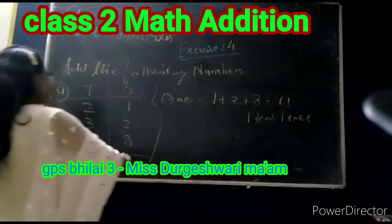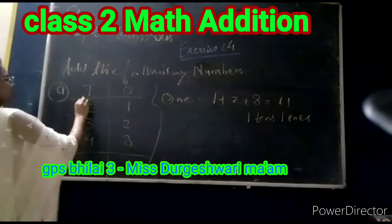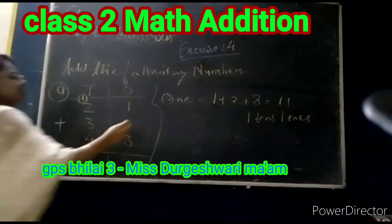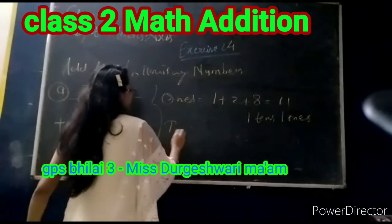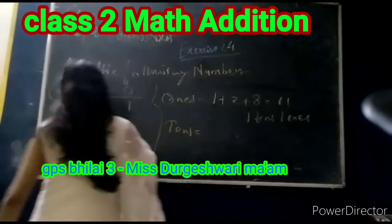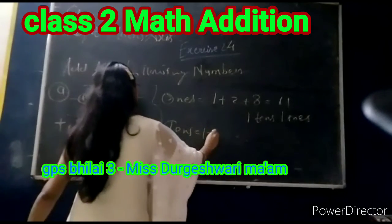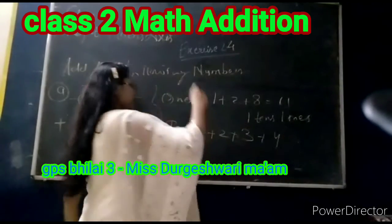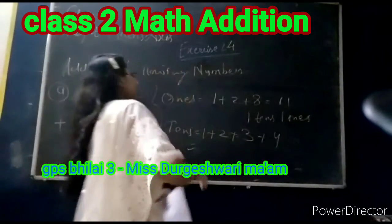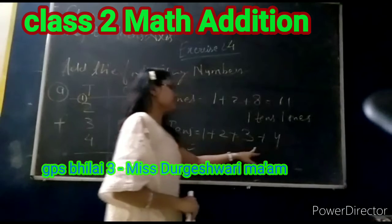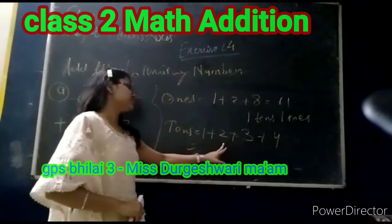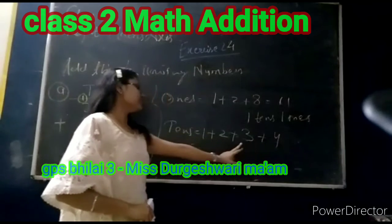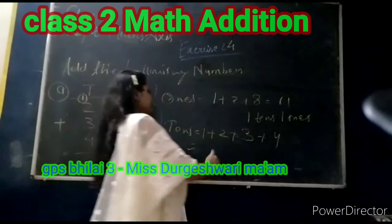So what we are doing — 1 one goes here on the right, and 1 carries over. For the tens column: 1 plus 2 plus 3 plus 4 equals 10. So 4 plus 3 is 7, 7 plus 2 is 9, 9 plus 1 is 10.